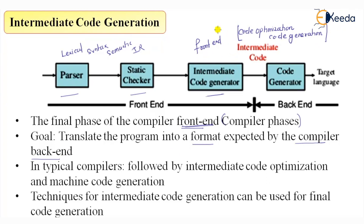We have to represent the IR in the way that the back-end expects. In a typical compiler, intermediate code is followed by optimization and machine code generation. The technique used for intermediate code can also be used for final code generation, so the way you represent your IR will ultimately help in generating the target code.